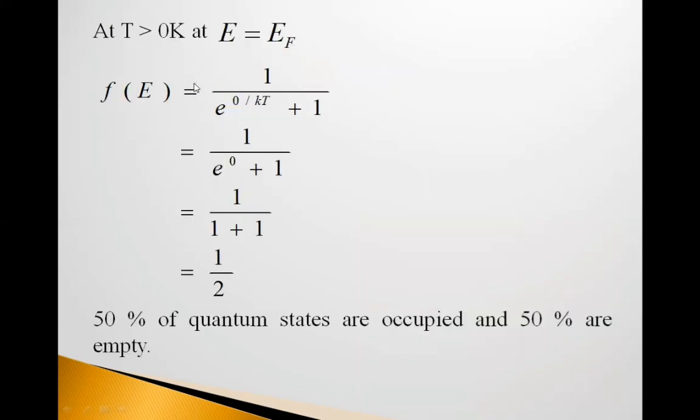At T greater than 0 Kelvin, at E equal to EF, occupation index f(E) is 1 upon e raised to 0 upon kT plus 1. 1 upon e raised to 0 is 1, 1 plus 1. So, 1 upon 2 is 1/2. So, 50 percent of quantum states are occupied and 50 percent are empty.